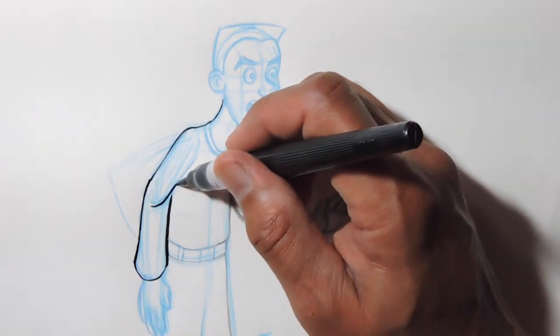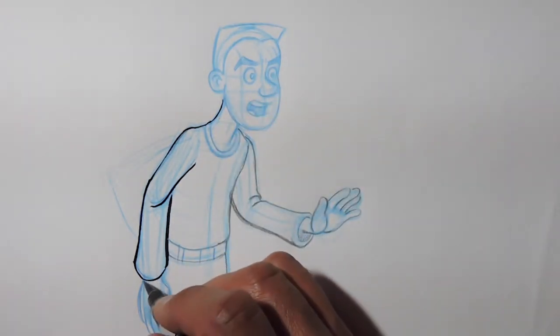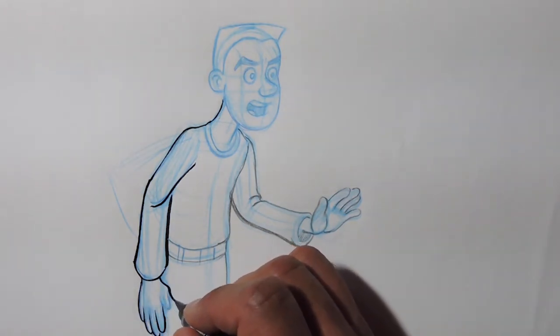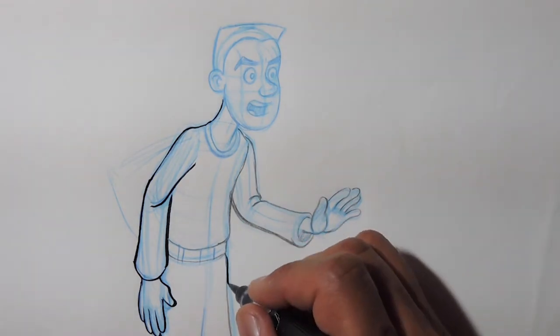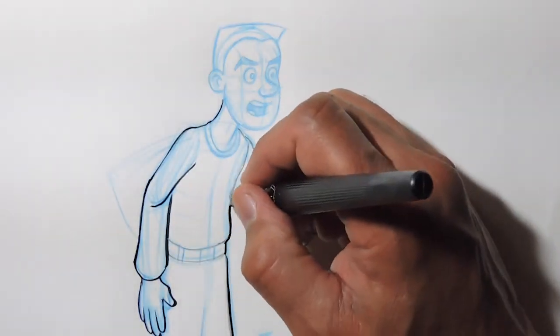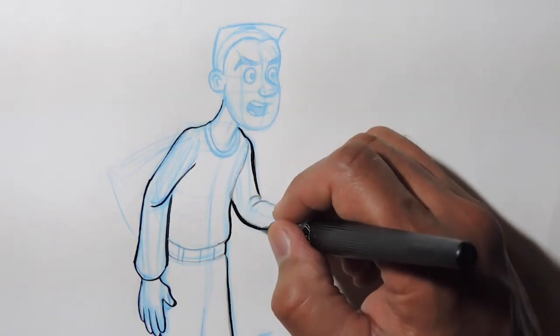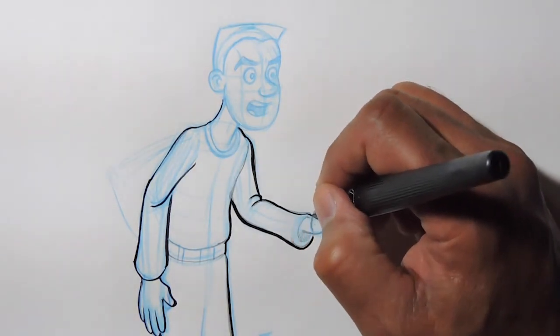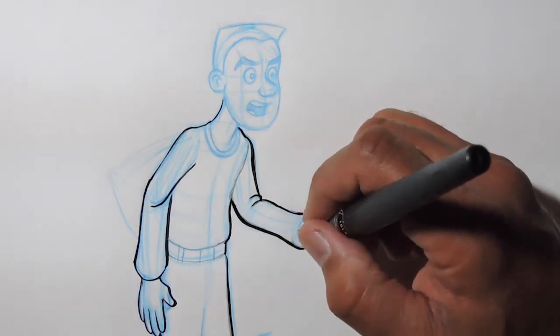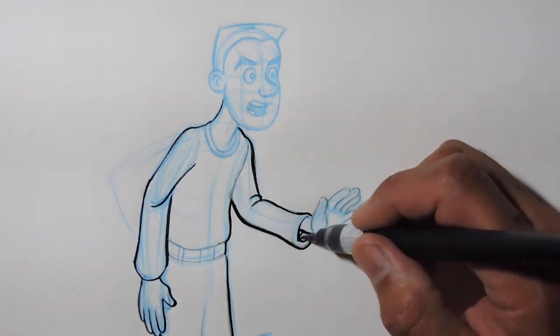You can make the line a little bit thicker. Now doing the hand, the fingers. I popped this thumb out a little bit just to give a little bit of difference than everything else. Now I'm holding it a little bit straighter here. Going around the sleeve to show the volume of the sleeve. Sorry, my hand is hiding it there a little bit.